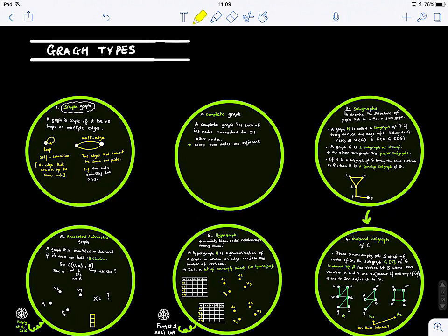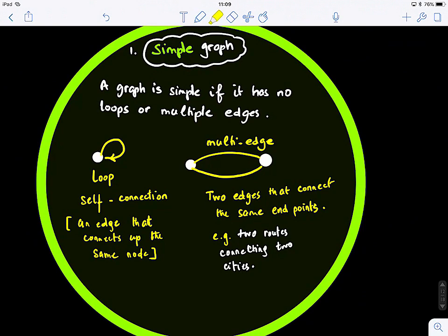So here we're going to look at different graph types and this is actually quite simple but there are some cool things in these circles that I'm going to reveal to you today. So first thing, simple graph. What is a simple graph? A simple graph, well a graph is simple if it has no loops or multiple edges.